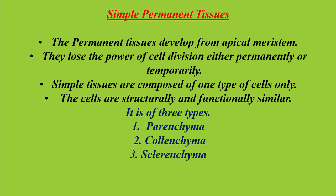Simple tissues are composed of only one type of cells, which are structurally and functionally similar. The three types of simple permanent tissues are parenchyma, collenchyma, and sclerenchyma.